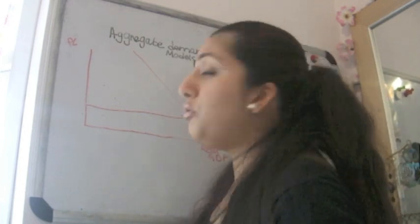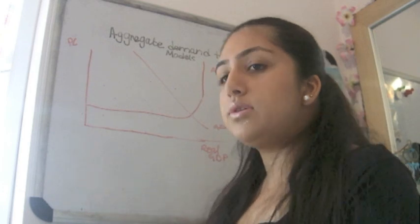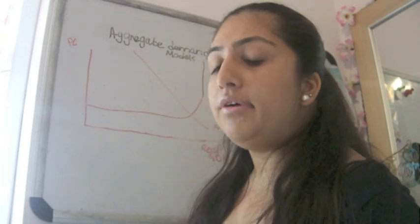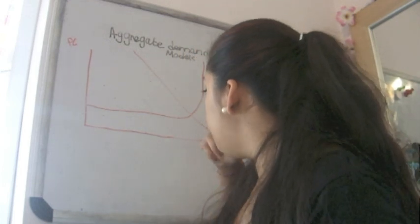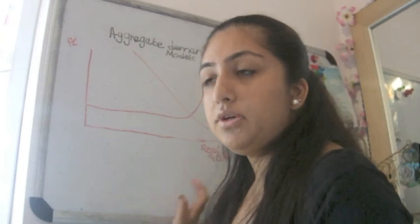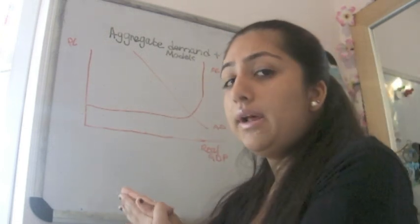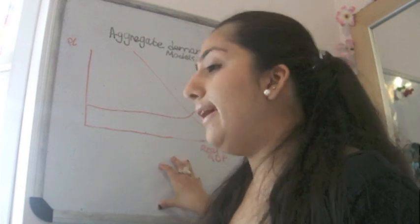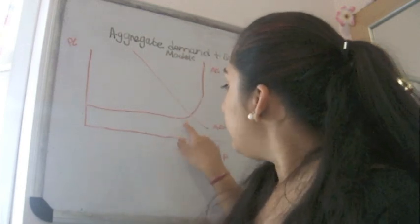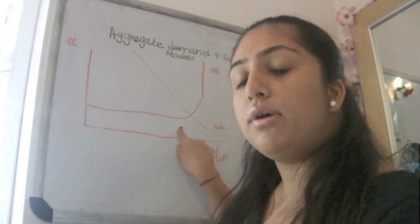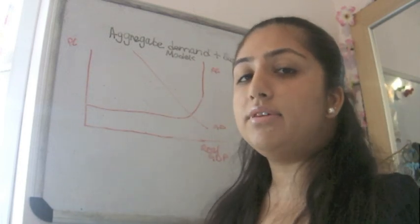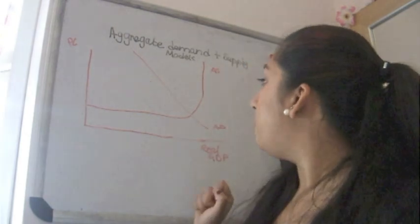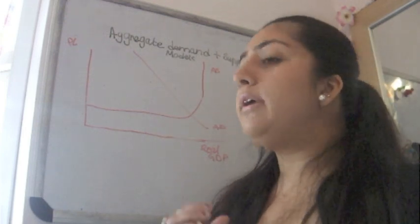Then you have the vertical bit, called full employment — this is where all resources are utilised. If you put in any policy like increased government spending or increased consumption and try to increase aggregate demand, your real GDP is not going to increase because all resources are already fully employed. All you get is inflationary pressure from an increase in price level. Importantly, for Keynesian economists this aggregate supply curve can be used in both the short run and long run — there is no distinction. In the long run you can have spare capacity, bottleneck, or full employment.